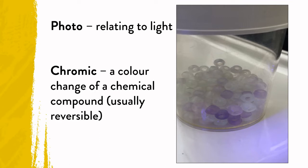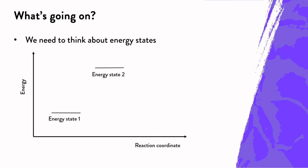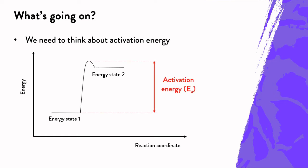So what is going on? When we think of light and photochromic materials, we need to think about energy states. Chemical compounds can exist in different energy states, and they always want to be in a lower energy state. To go from a low energy state to a high energy state, you've got to put in some energy, and this energy is known as the activation energy.